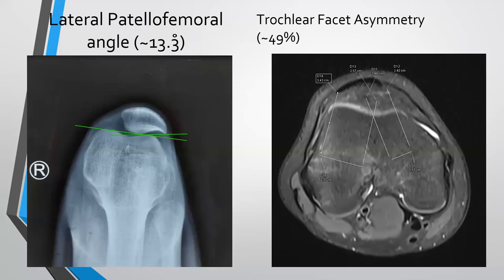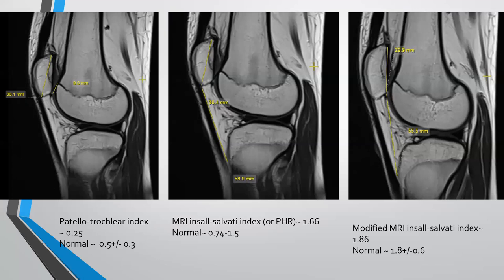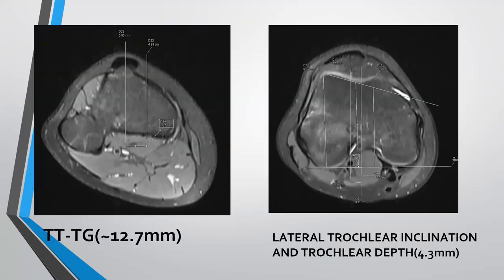Lateral patellar femoral angle was calculated as 13.3 degrees, and on axial MR cuts, the trochlear facet asymmetry came out to be 49%. Patellar trochlear index is calculated on the sagittal MR images and came out to be 0.25, patellar height ratio was 1.66, and modified MRI Insall-Salvati index at 1.86. This all suggests there is a high-riding patella, that is patella alta. TTTG came out to be 12.7, and lateral trochlear inclination and trochlear depth came out to be 4.3.